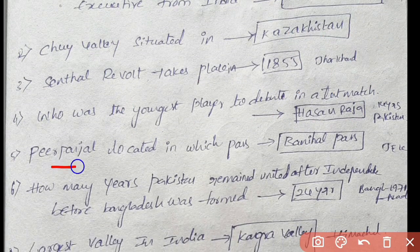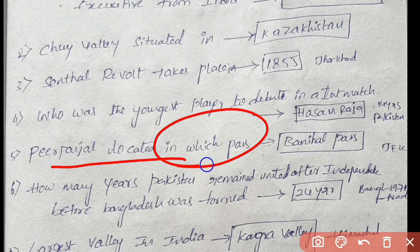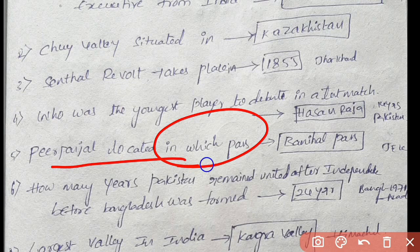Peer Panjal located in which pass? Peer Panjal is in JNK, Jammu and Kashmir. That pass is Banihal Pass.